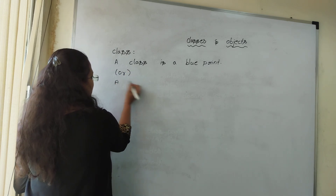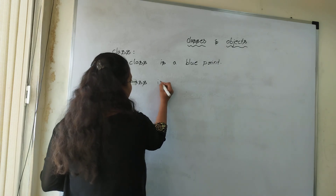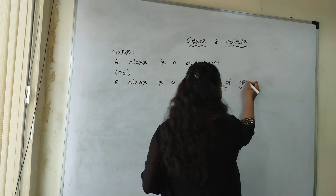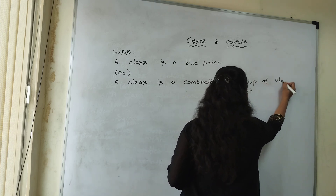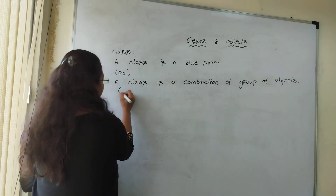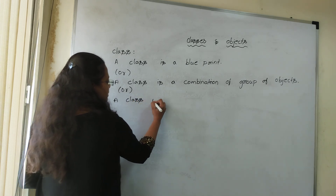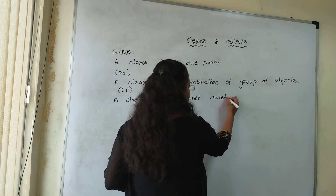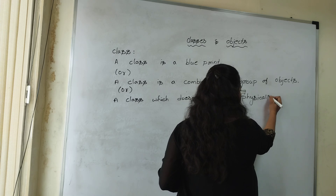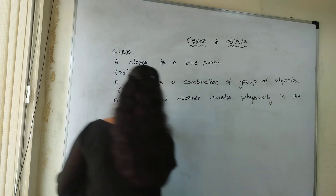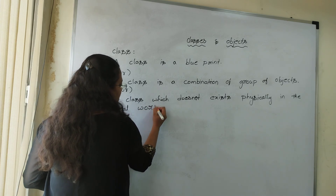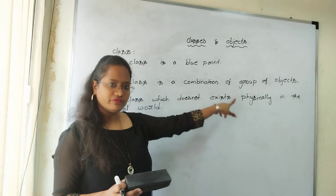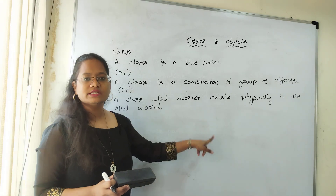Or we have another definition: a class is a combination of group of objects. And the third definition is: a class which does not exist physically in the real world. So you can say a class is a blueprint, or a class is a combination of group of objects, or a class which does not exist physically in the real world.